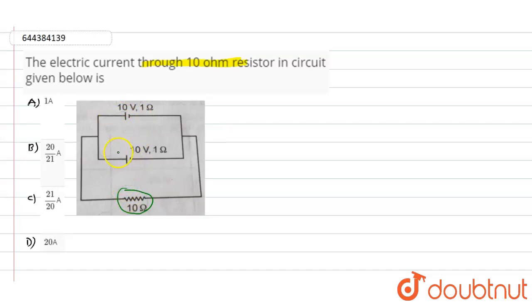One is 10 volts with one ohm internal resistance and 10 volts with one ohm internal resistance. Current passing out from this first voltage source will be i1 and from the second voltage source the current will be i2, so the current obtained near this 10 ohm resistor will be i1 plus i2.